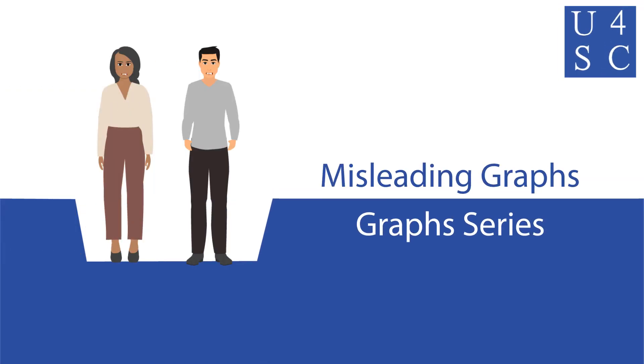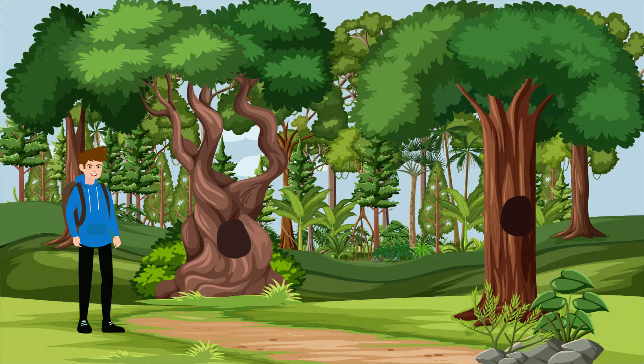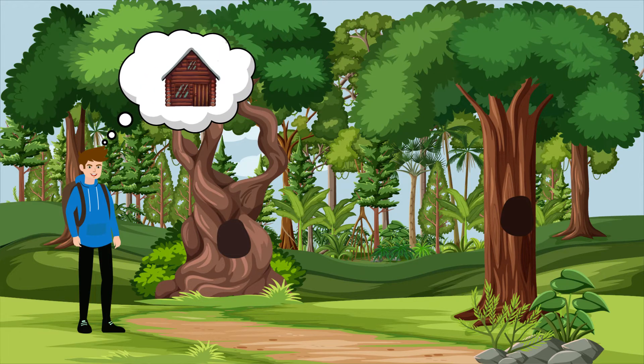Academy for Social Change presents Misleading Graphs. Imagine that you regularly go camping and want to build a log cabin for maximum comfort.